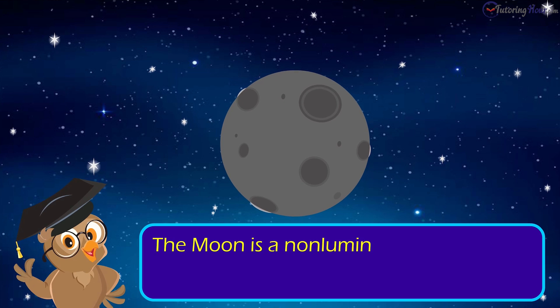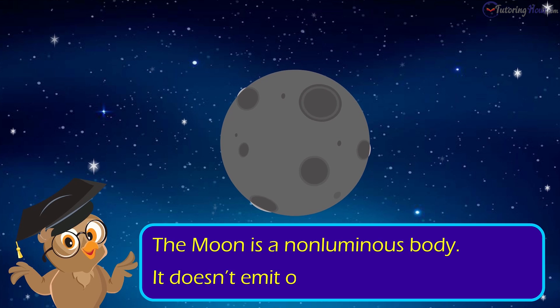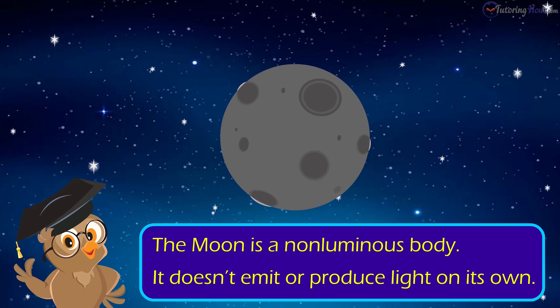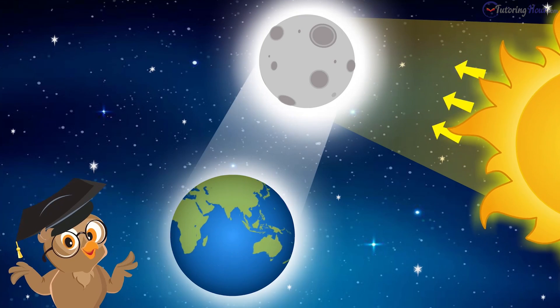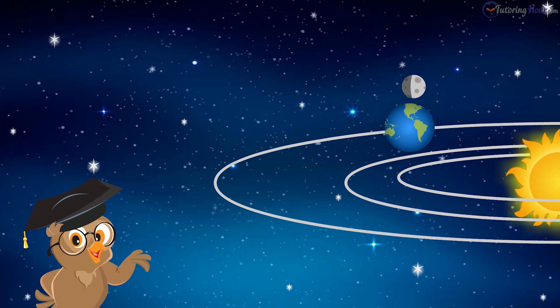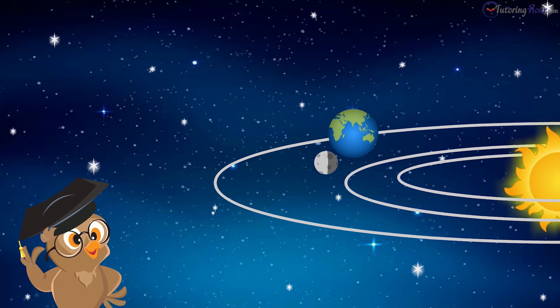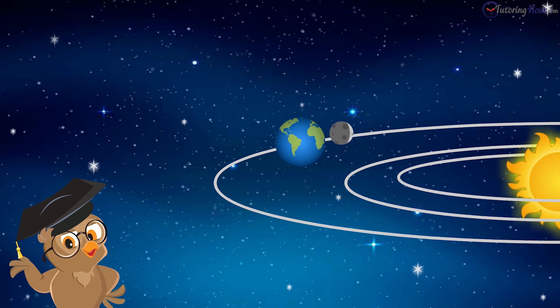The moon is a non-luminous body. It does not emit or produce light on its own. The moonlight is actually the light of the sun reflected by the moon. The moon goes around the earth just like the earth goes around the sun, and it also spins on its axis.